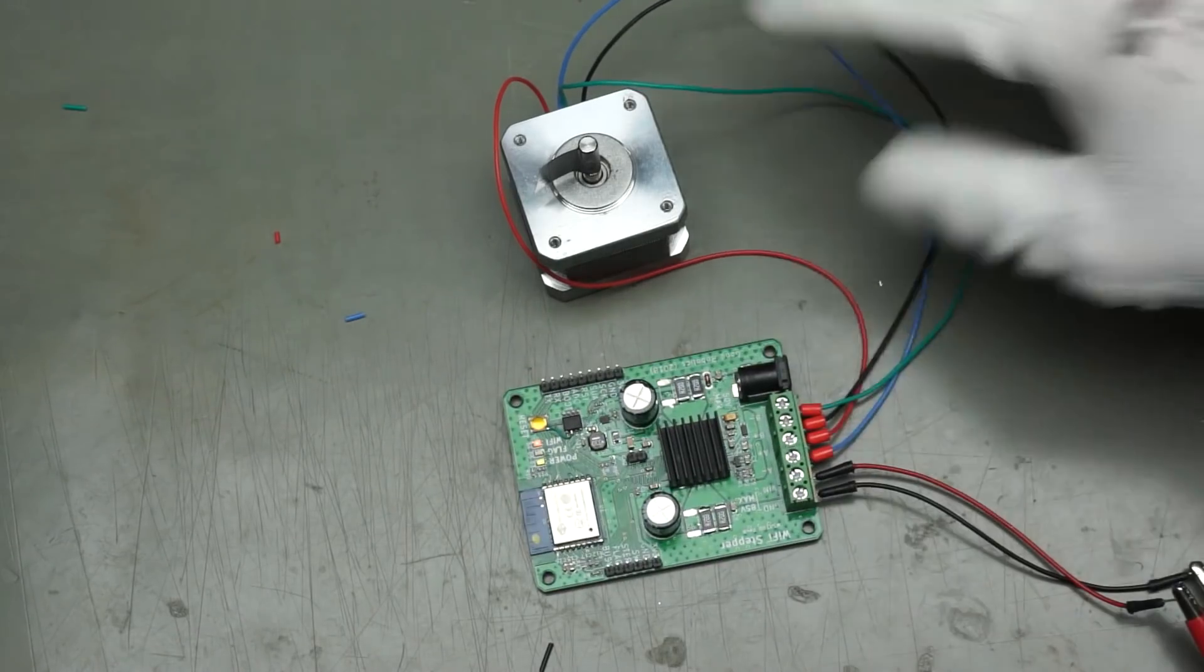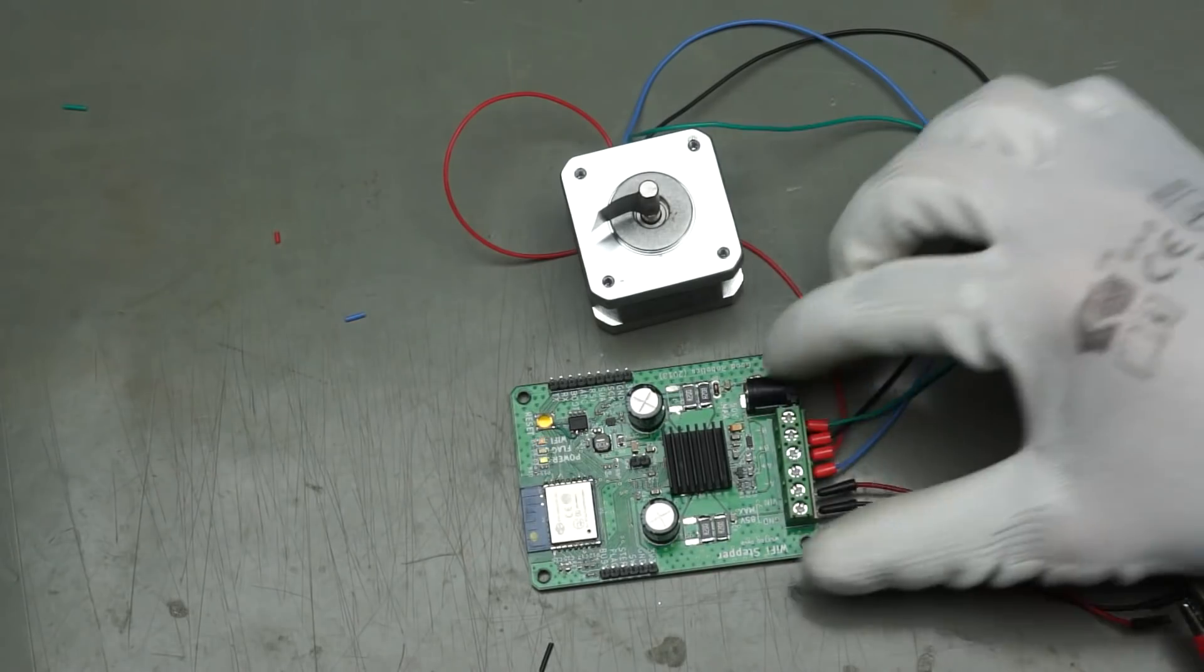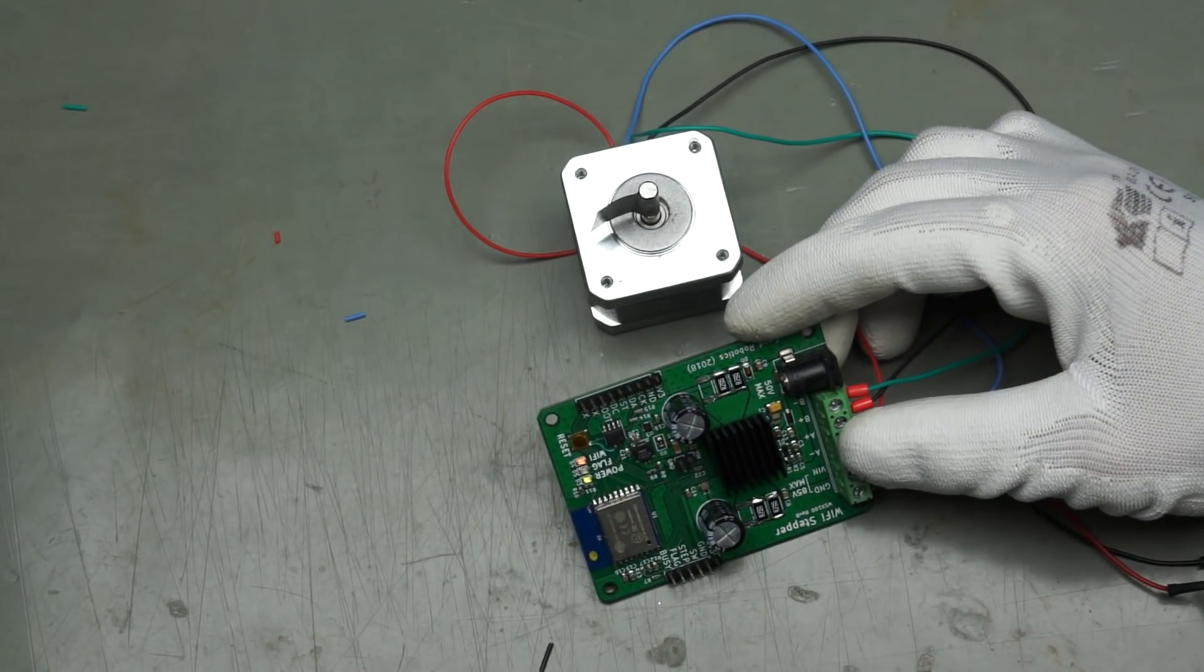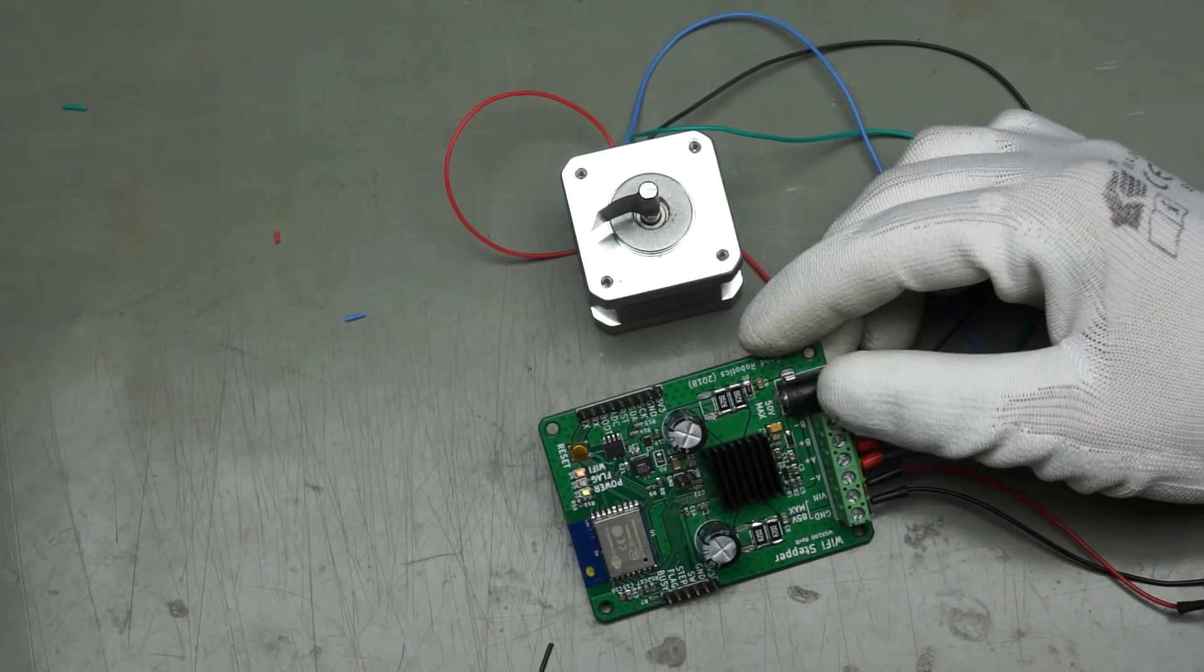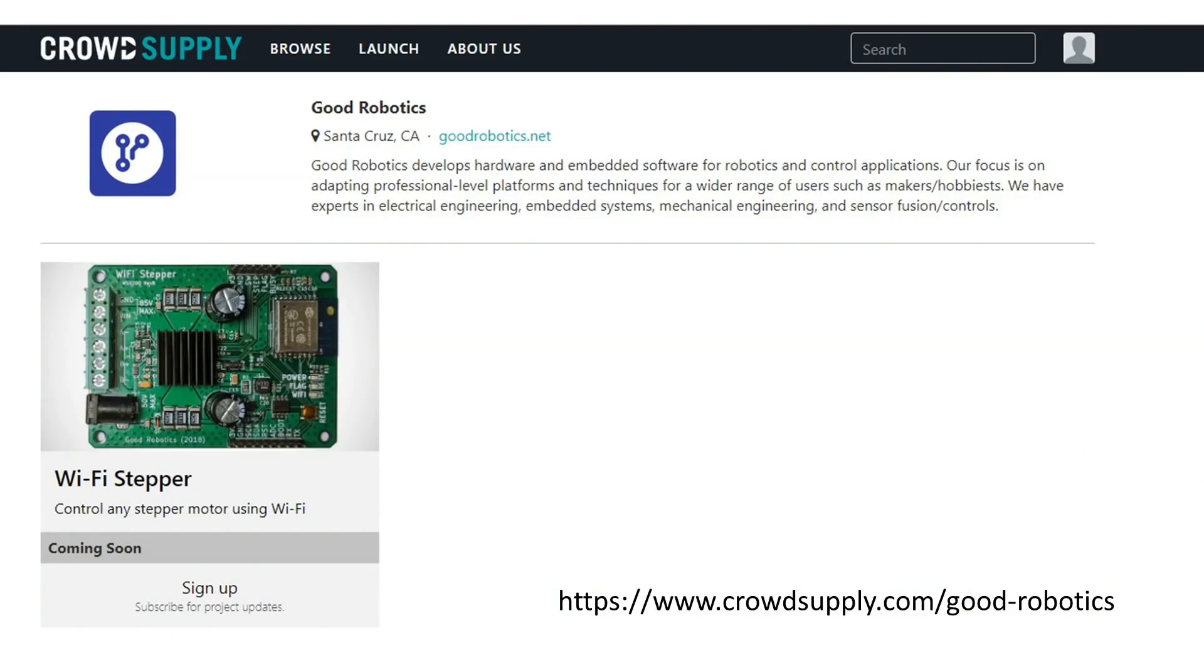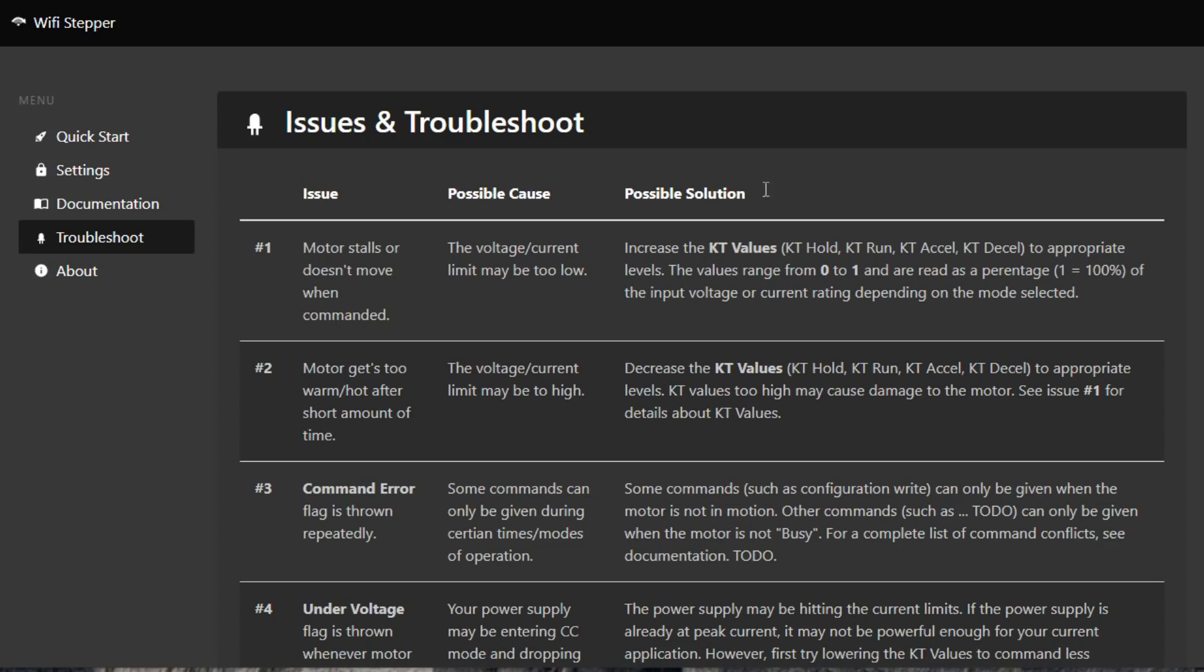Now I connected the board to one of the Neymar stepper motors. A Neymar 17 stepper motor. It is a bipolar one with four wires. A and B plus and minus. And I connected it to around 24 volts. You can connect this wi-fi stepper up to 85 volt which is quite a lot. And with this barrel connector here up to 50 volts. Now I do not know exactly all the details. You can have a look at it if you want in the link in the description. This ESP creates a web page where we can do some things. And this web page actually is very very well made I think. You see it here. It has a quick start guide. It has settings, documentation and even troubleshooting. So the issue is the possible cause and possible solution. Very well made I think.